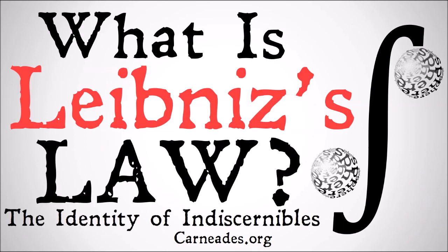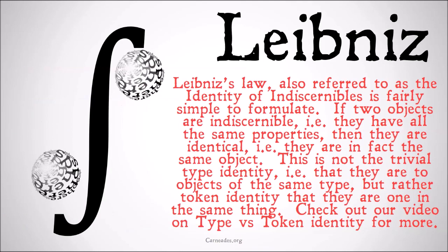The identity of indiscernibles. Leibniz's Law, also referred to as the identity of indiscernibles, is fairly simple to formulate. If two objects are indiscernible — in other words they have all the same properties — then they are identical. They are in fact the same object. This is not the trivial type identity, i.e. that they are the same type of object, but rather a token identity that they are one and the same thing.